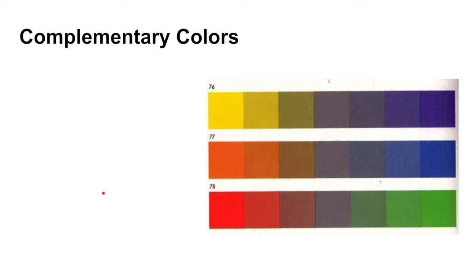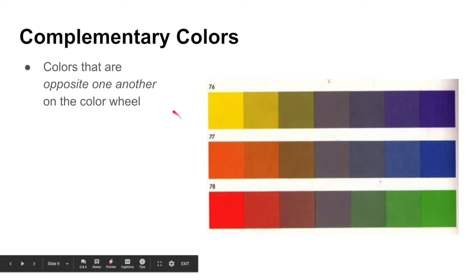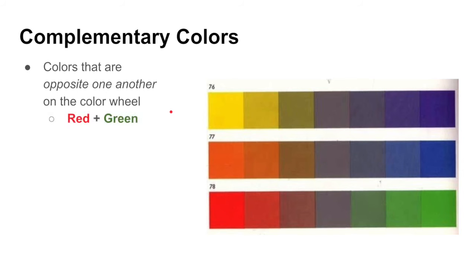And then our last color scheme that we're going to talk about is complementary colors. So complementary colors are colors that are opposite one another on the color wheel. So those colors aren't next to each other. So they're going to be very different. That's why they're opposites. And we would say red and green are one, blue and orange, and yellow and violet. One way you could remember it is Christmas, Denver Broncos, Minnesota Vikings. If you're into football, that might help.